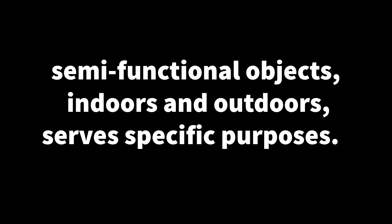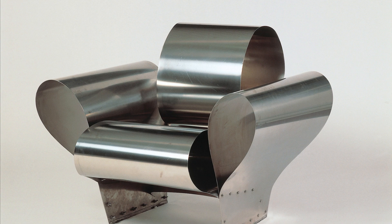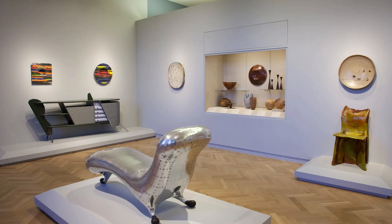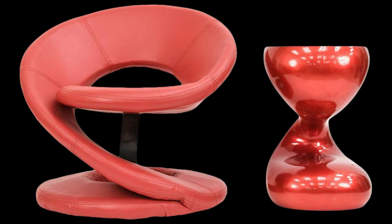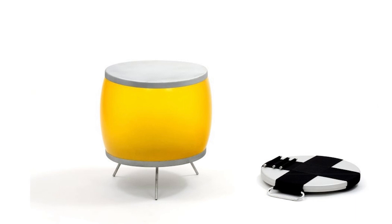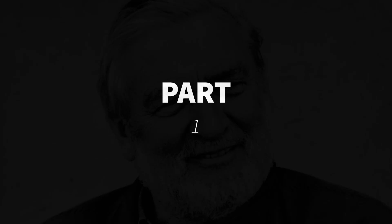Furniture usually refers to semi-functional objects, indoors and outdoors, that serve specific purposes. While it is semi-functional, if a chair is not suitable, is that still a furniture? Trying to really define furniture with strict boundaries is difficult in that the term has developed over the years and has now become flexible and oftentimes subjective. But specifically in our episode, we'll be talking about pieces that are meant to be functional, suitable, and produced for sale.